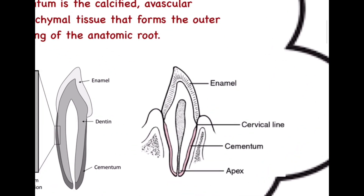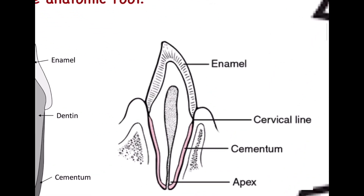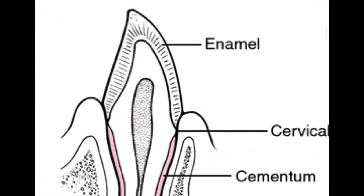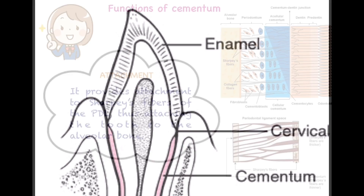We can see that this is the root portion, and in the circumference there is a layer of cementum. So cementum is basically functioning as a protective layer around the anatomical root.